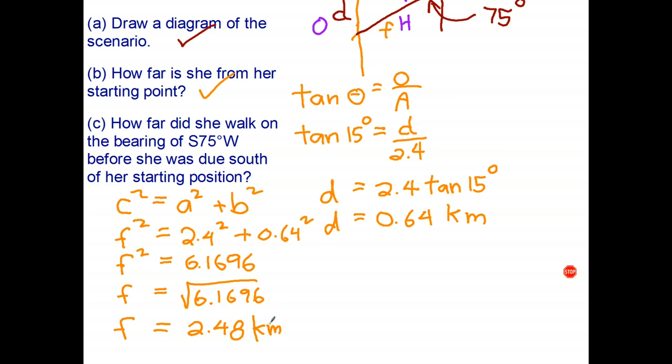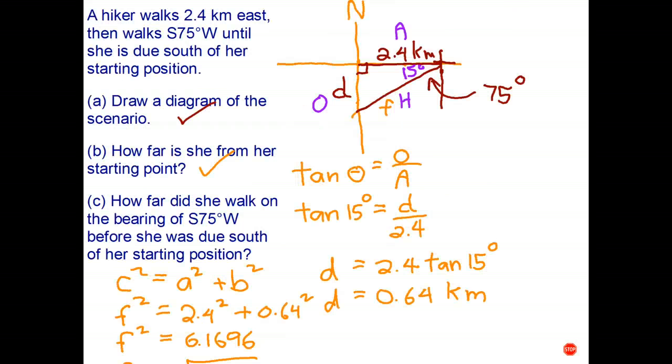So that was a slightly more challenging question. First thing is we had to draw the diagram, and then we had to use our knowledge of bearings to work out the answer to part B, and then we had a choice of using trigonometry or Pythagoras to work out the distance that she walked on the bearing of south 75 degrees west. And that's it, we're finished. Well done. That's the end of our unit on trigonometry.